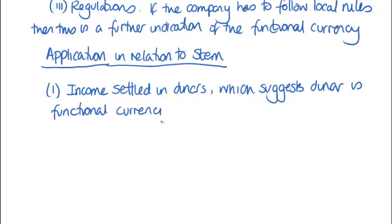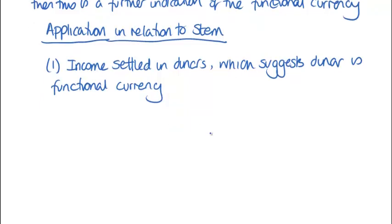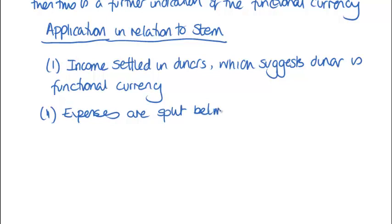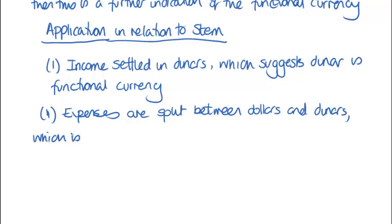We look at our first test. Next we turn our attention to expenses, and here we've got the problem that we can't really reach a conclusion as far as STEM is concerned. Because we've got this split, there's evidence to support both the dollar and the DINAR being the functional currency. So we can't really reach a conclusion here.